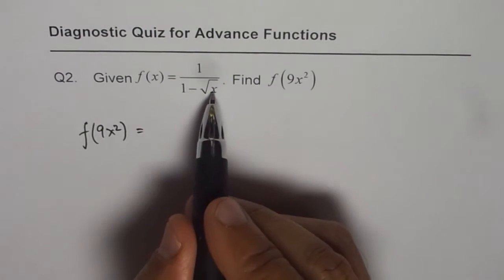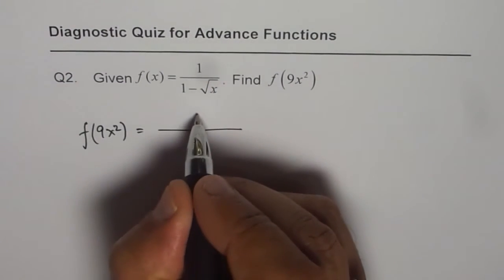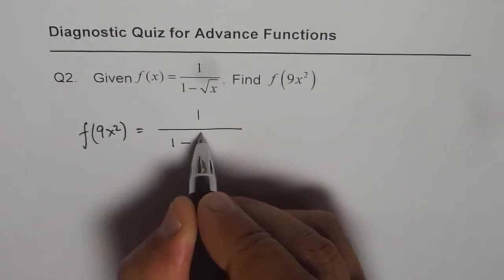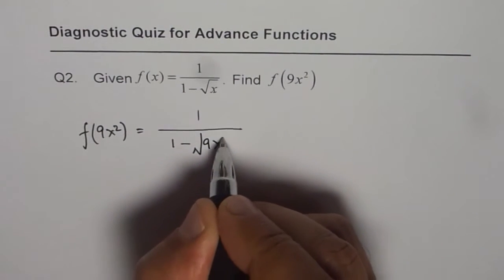That means we will replace x with 9x squared. So we get 1 over 1 minus square root of 9x squared.